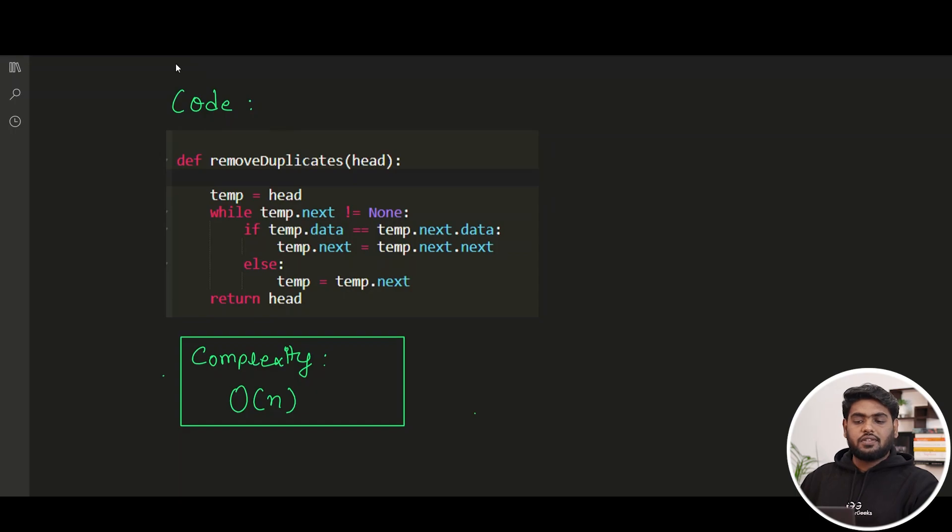So when you have to code, this is a sample code for it. You are just initializing your temporary reference with the head. Then you are traversing it, and inside your traversal what you have to do? You just have to check the data that you have to the next data. And if that is so, this line is just removing the node in the middle. You are making this connection.